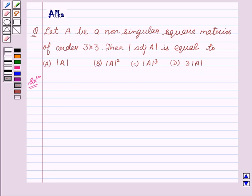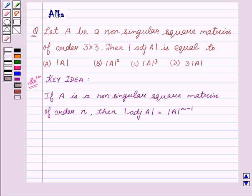Now, let's start with the solution. The basic idea behind the question is: if A is a non-singular square matrix of order N, then determinant of adjoint of A equals determinant of A to the power N minus 1.